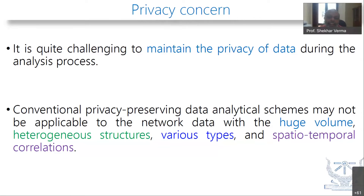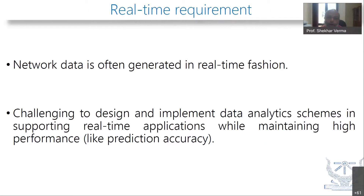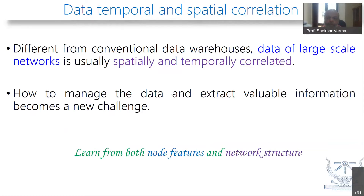We may have streaming data, so we have a real-time environment. In an IoT or in a vehicular type of situation, you are getting data all the time. If you have self-driving autonomous vehicles, the data is coming in real time and you have to take decisions in real time — you need very high accuracy because human life is involved. Most importantly from our point of view, the data is spatially and temporally correlated. Not only does the data have large scale, but it is spatially and temporally correlated, and we must learn both from individual node features as well as from the network structure.